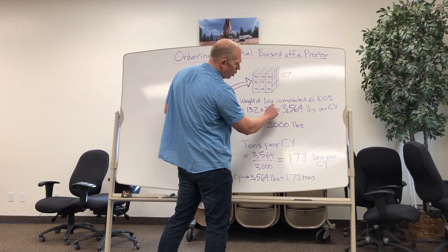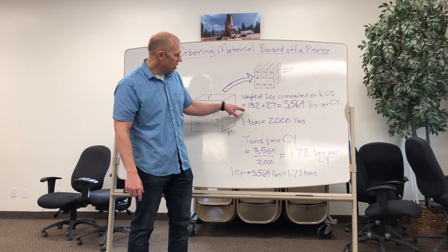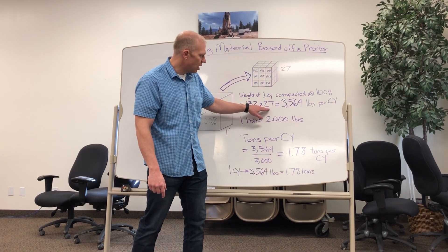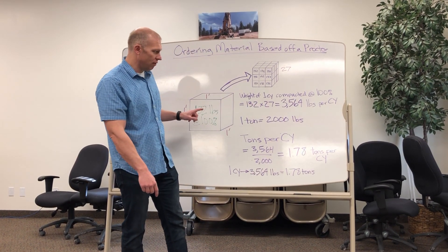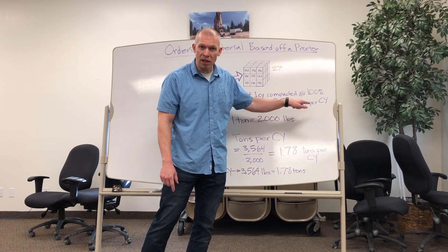The weight of one cubic yard compacted at 100% is what we're trying to calculate here. So if it weighs 132 pounds times 27 of these, we know that this particular kind of dirt would weigh 3,564 pounds per cubic yard.